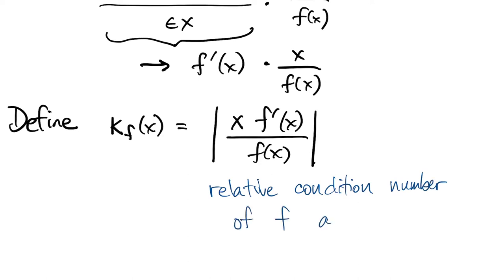Notice that kappa, like the derivative itself, depends on x. So this condition number depends on not just the problem that we're solving, but the data that we're trying to solve it at.